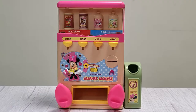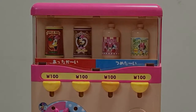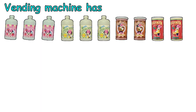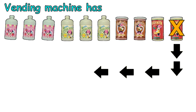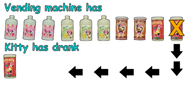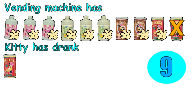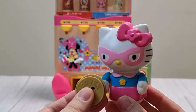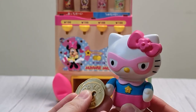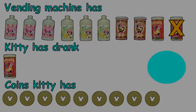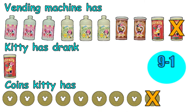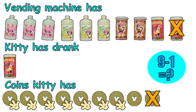Finished drinking! Now, the vending machine is left with... 10 drinks minus 1 apple tea which Kitty has drank. This equals to 10 minus 1! 1, 2, 3, 4, 5, 6, 7, 8, 9! 9 drinks left! How many coins do you have left, Super Kitty? Let me see! I have... 9 coins minus 1 coin equals... 1, 2, 3, 4, 5, 6, 7, 8! 8 coins left!